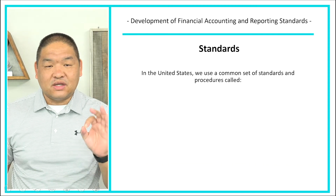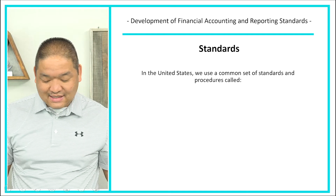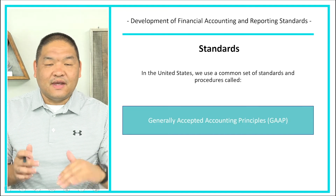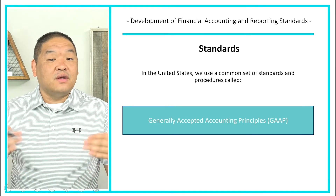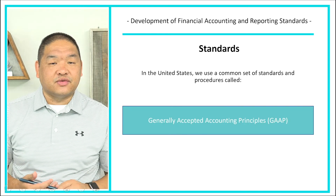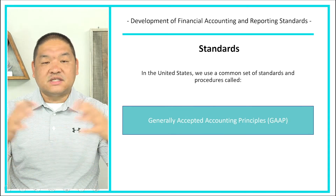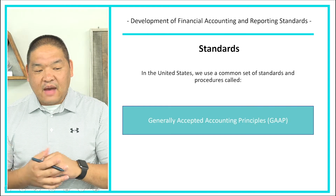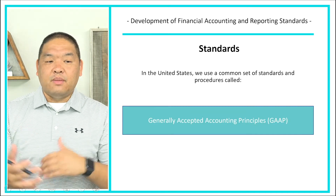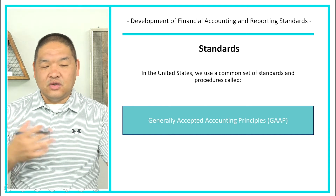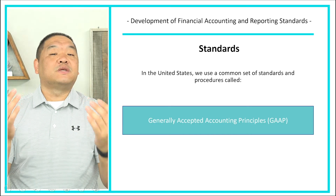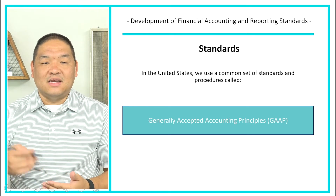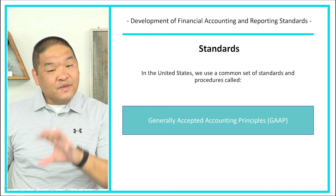In the United States we use a common set of standards and procedures called GAAP, and to be more specific it's U.S. GAAP. Other countries might have their own generally accepted accounting principles — for example, international financial reporting standards (IFRS) — or even their own separate standards. So be specific when talking about GAAP; here we're talking about United States generally accepted accounting principles.